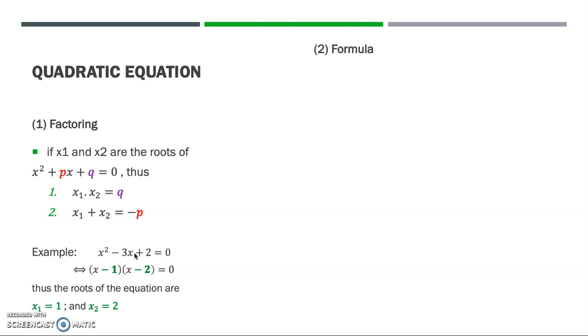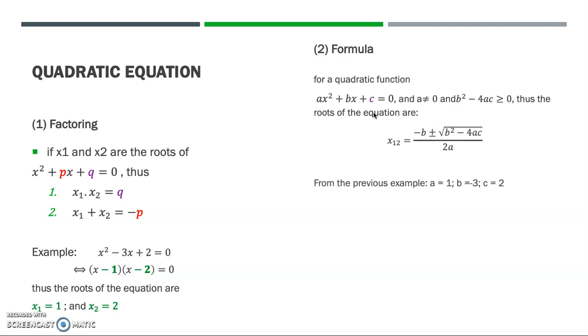Another alternative to solve the quadratic function is through a formula. So, for a quadratic function ax² + bx + c = 0, and we assume that a ≠ 0 and b² - 4ac ≥ 0, thus the roots of the equation can be solved through this formula: x = (-b ± √(b² - 4ac)) / 2a.